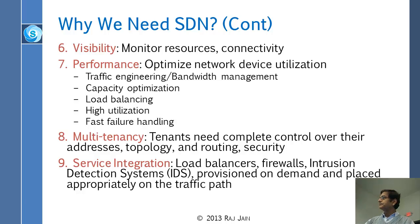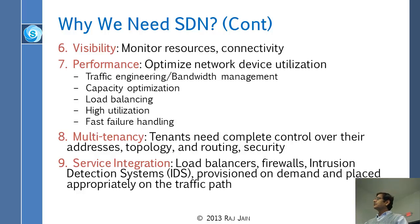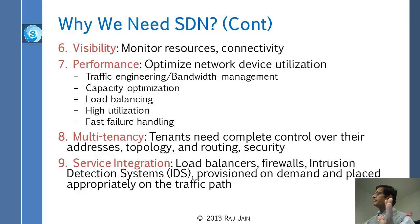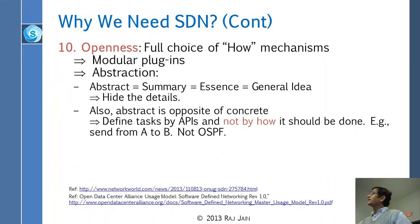Sixth, visibility: we should be able to see everything. Seventh, performance: optimizing performance, planning and optimizing capacity, doing load balancing, fast failure handling. Eighth, multi-tenancy: every tenant can do their own thing with their own addresses, topology, routing, and security. Ninth, service integration: tenants should be able to put their load balancers, firewalls, and IDS wherever they want — the network would be fluid; you can move services anywhere.